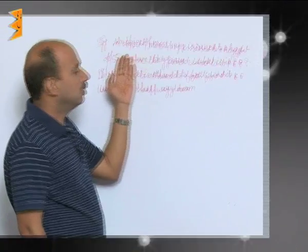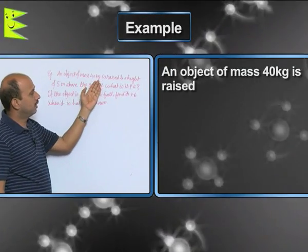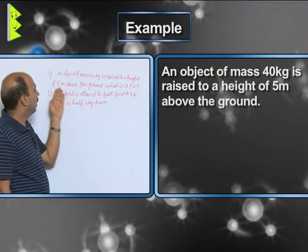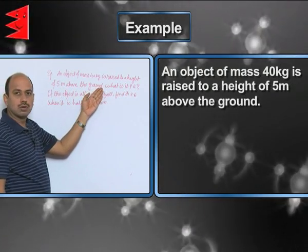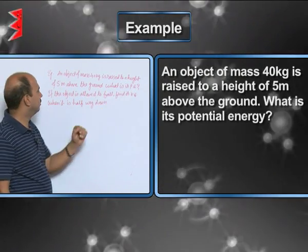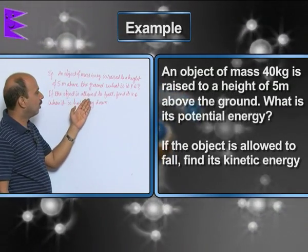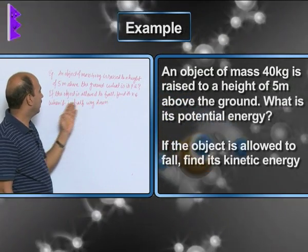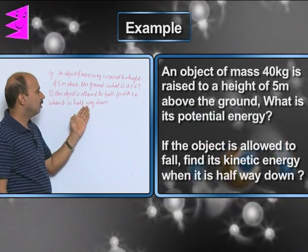In this example, an object of mass 40 kg is raised to a height of 5 meter above the ground. What is its potential energy? If the object is allowed to fall, find its kinetic energy when it is half way down.